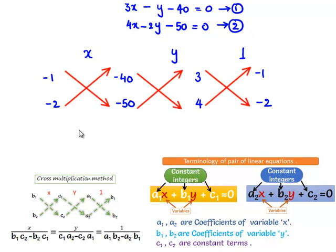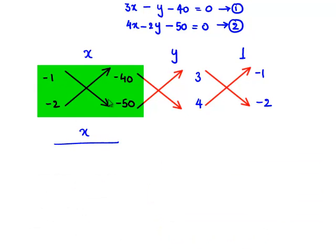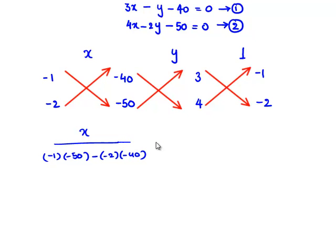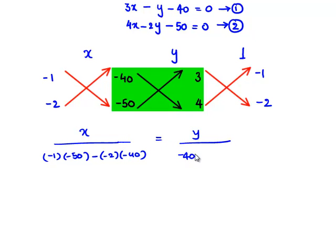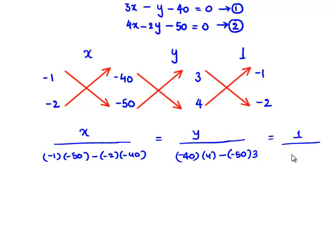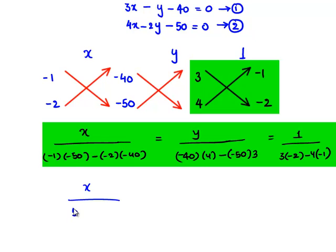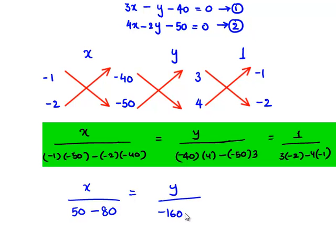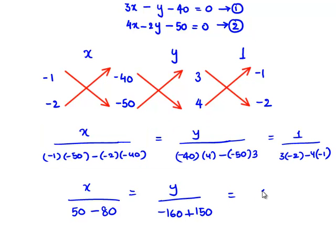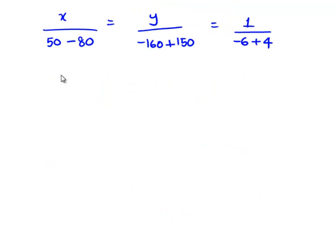On cross multiplication we get: x divided by (minus 1 times minus 50, minus minus 2 times minus 40) equals y divided by (minus 40 times 4, minus minus 50 times 3) equals 1 divided by (3 times minus 2, minus 4 times minus 1). This gives x divided by (50 minus 80) equals y divided by (minus 160 plus 150) equals 1 divided by (minus 6 plus 4), which simplifies to x divided by minus 30 equals y divided by minus 10 equals 1 divided by minus 2.